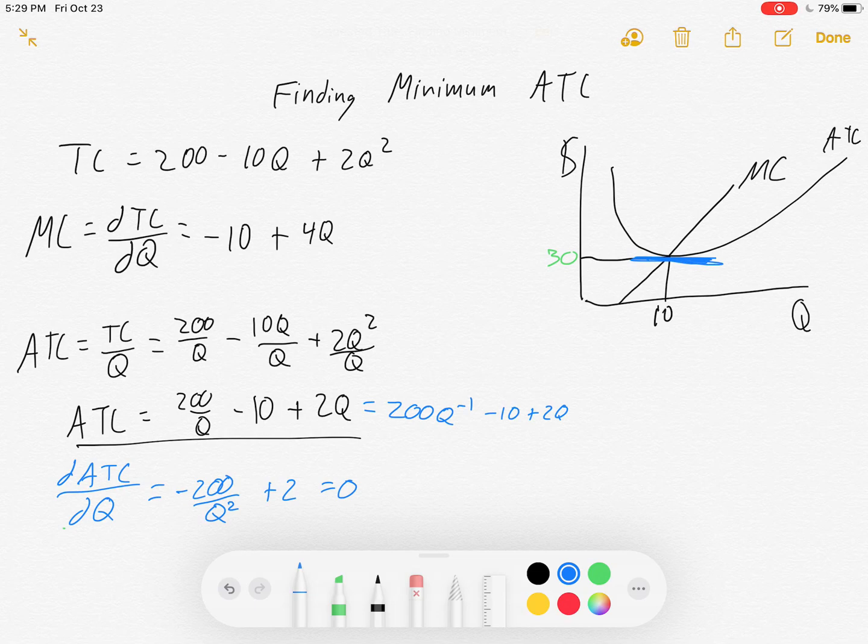So do you see where that derivative came from? The derivative of this piece is minus 200 over Q squared because our exponent, negative 1, multiplied by 200, and then became a negative 2. The minus 10, when you take the derivative, doesn't have anything left. It's just a 0 slope on the average total cost function. And then 2Q, the derivative is just 2.